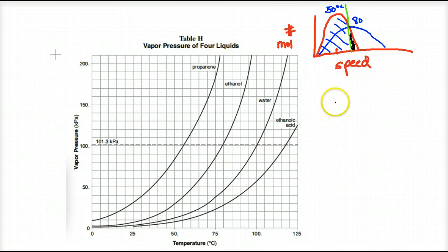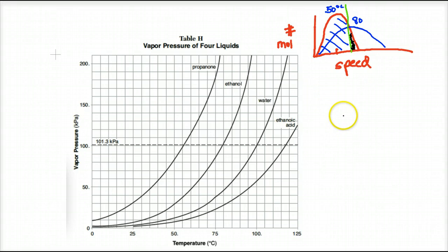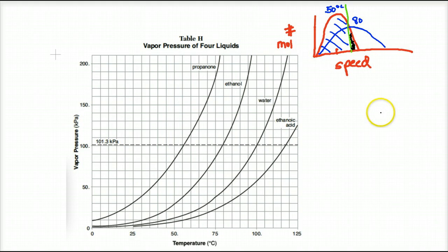You know this for a fact: on a cold day, puddles in the street definitely do evaporate. On a warm day they evaporate faster, but neither temperature is at the boiling point of water. Boiling is maximum evaporation. Even at colder temperatures there are still enough molecules to evaporate, and at warmer temperatures like 80 degrees Celsius there are even more molecules that have enough speed or energy to overcome their own attractions.